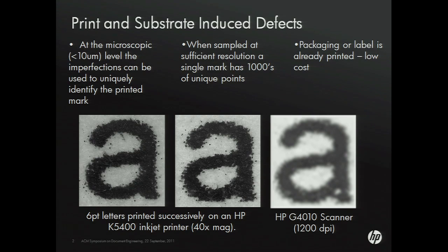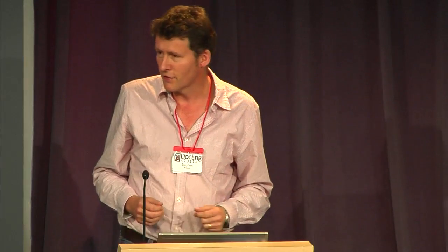Conversely, if we look at this with a low-resolution scanner, everything gets blurred away. The image on the right here is the same as the image in the center, but you can't get all those features from it. So essentially, to be able to identify things uniquely, we need some low-cost hardware to do this — that we could put with every printer — and we need some image processing.